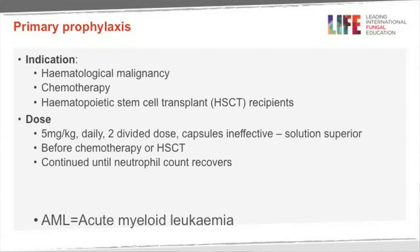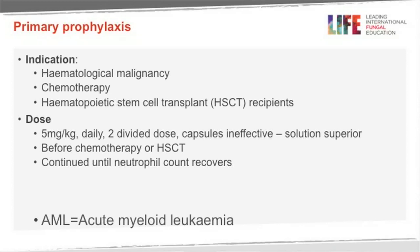In leukemia therapy, it's a good idea to give high-risk patients prophylaxis to prevent fungal infections, particularly AML patients and other high-risk groups. Itraconazole has been extensively studied for this purpose with many trials. Capsules are not effective, but the solution is partially effective in reducing episodes of invasive aspergillosis. The typical dose is 5 mg/kg twice a day, given just after chemotherapy is finished before neutropenia onset, continuing until neutropenia resolves.